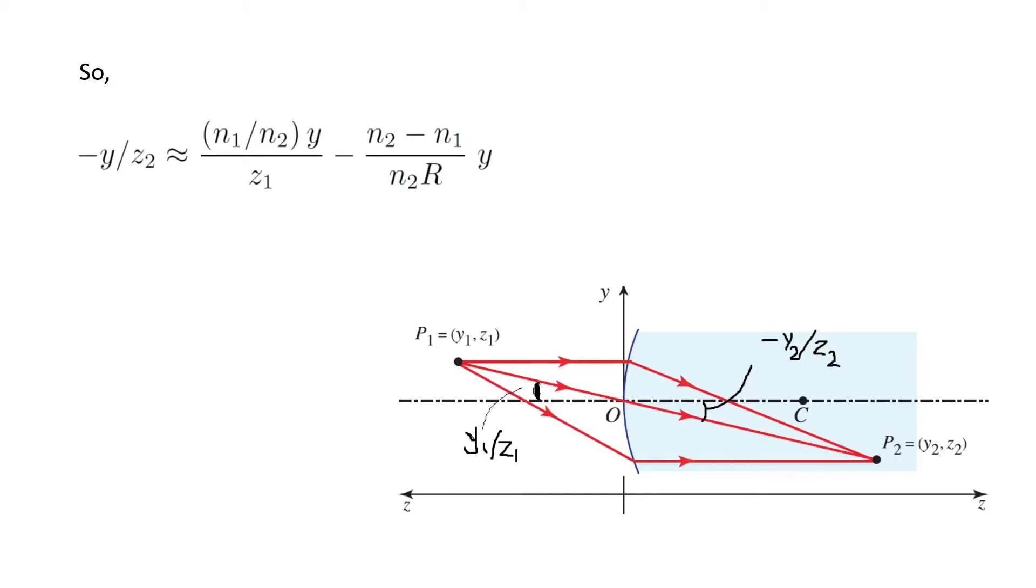So I can substitute in the previous relation and obtain this one. And if I cancel y, I obtain this famous equation: n1 over z1 plus n2 over z2 is almost equal to (n2 minus n1) divided by R.